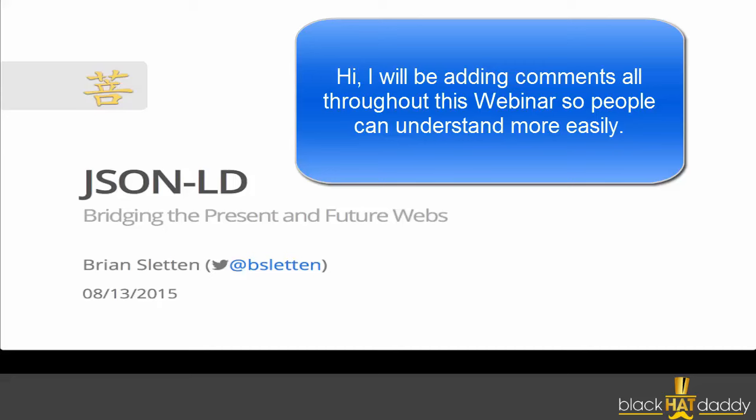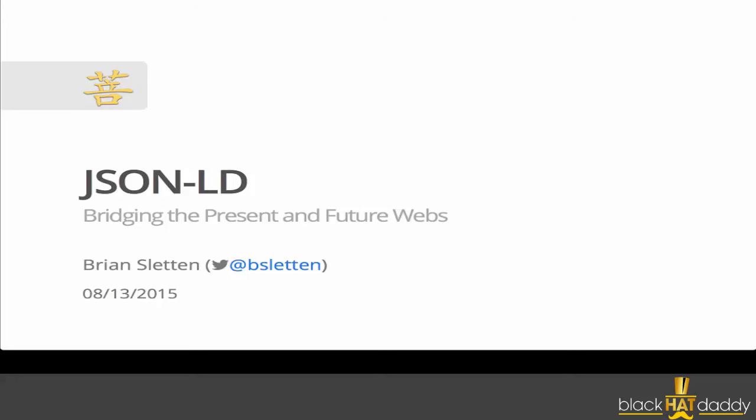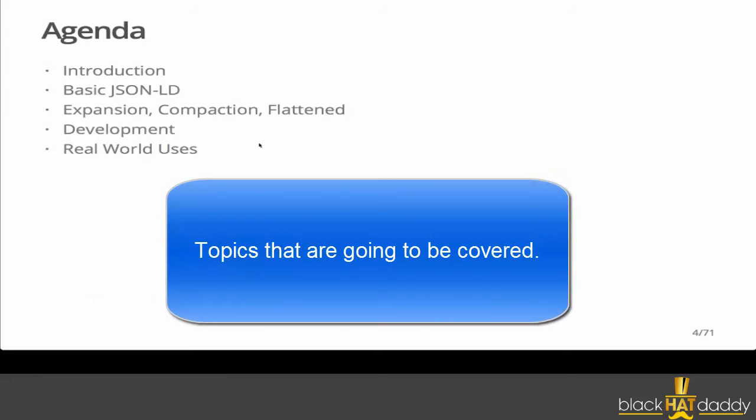To understand why JSON-LD is so important, we're going to first have a quick re-introduction to the linked data part of it, and then we'll go into what JSON-LD brings to the table. We'll cover basic JSON-LD syntax, mechanical transformations, development tools, and real world uses — including improving search results and sharing information in a machine-processable, standards-based way. I'll go through the material fairly quickly to save time for questions at the end, but my contact information will be at the end.